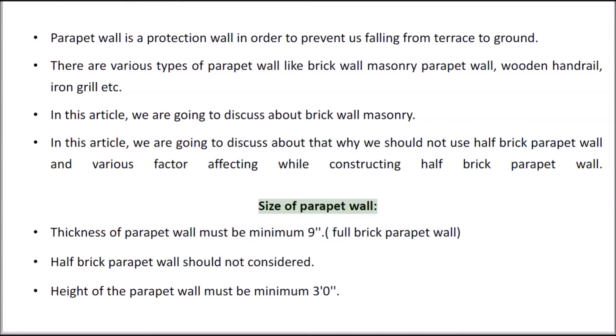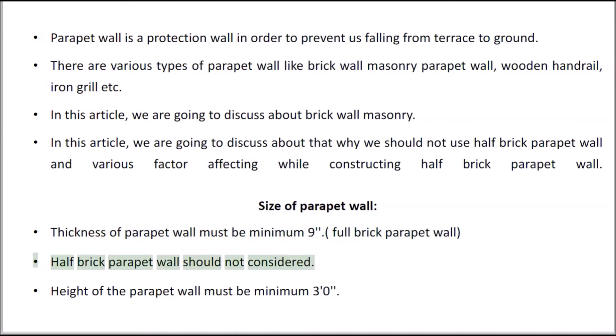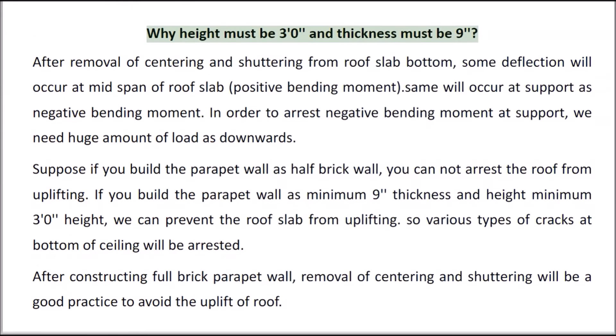Size of Parapet Wall. The thickness of the parapet wall must be a minimum of 9 inches — a full brick parapet wall. A half brick parapet wall should not be considered. The height of the parapet wall must be a minimum of 3 feet. But why must height be 3 feet and thickness be 9 inches?